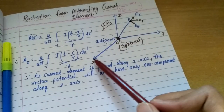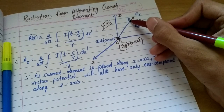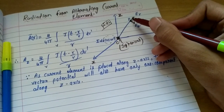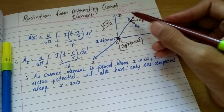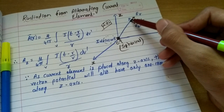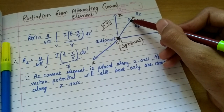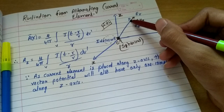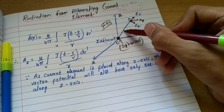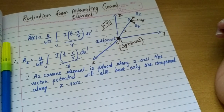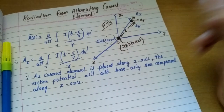This is the z-axis, and this is the x, y, and z-axis. Now what we have to do is calculate the radiation — that means the electric and magnetic field components. Let's calculate this radiation at some point P, where point P is at a distance R from the origin.